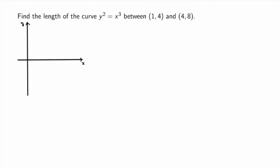Let me work through an example. Suppose I want to find the length of the curve y² = x³ between the points (1, 4) and (4, 8). Sketching the graph, y² = x³ implicitly defines two functions — the positive and negative square root branches. Over this interval, y is always positive, so I can pick the positive square root and work with the unique function y = √(x³) = x^(3/2). I don't need to worry about the negative branch.